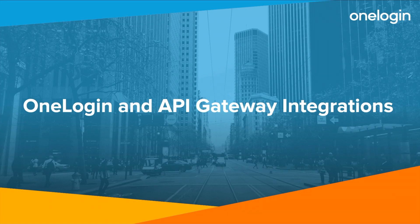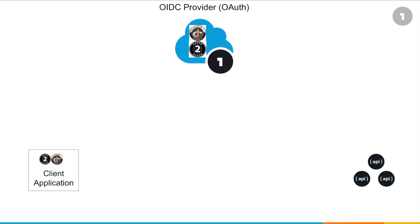In this video we're going to look at how OneLogin can work alongside API gateways to protect customer APIs. OneLogin acts as an OAuth authorization server and OpenID Connect provider, so client applications would first require access to OneLogin to obtain an access token using any of the standard flows or grant types.